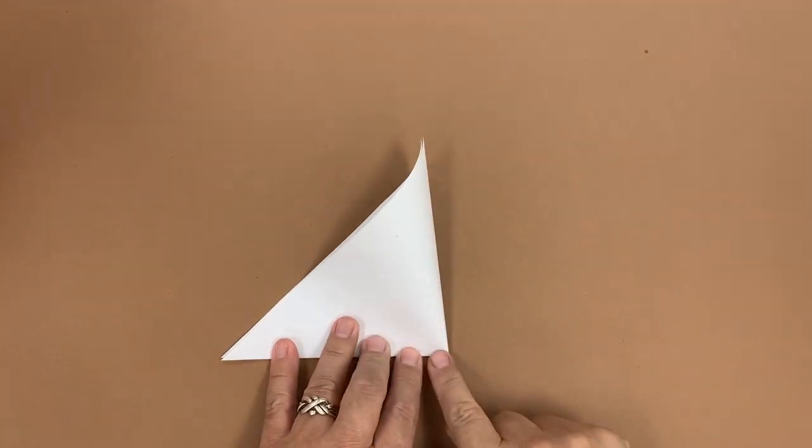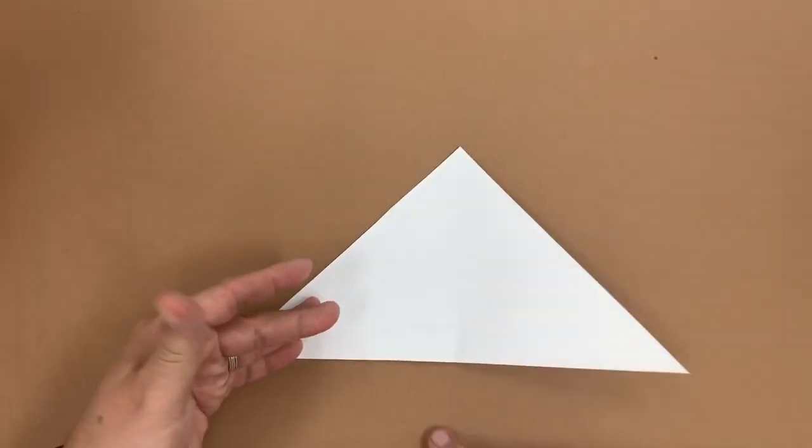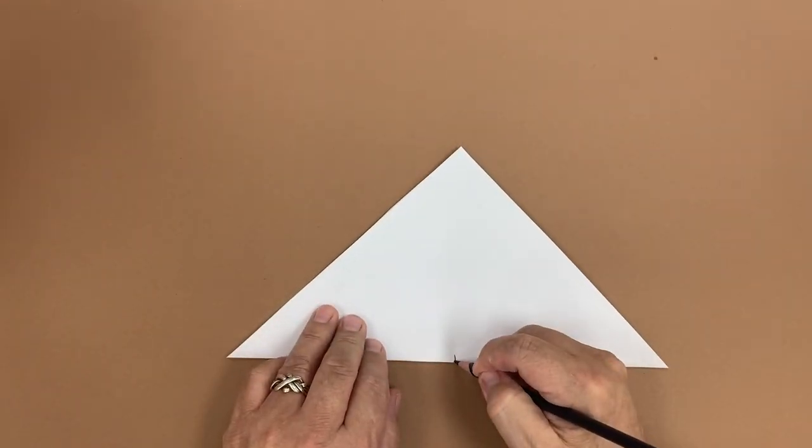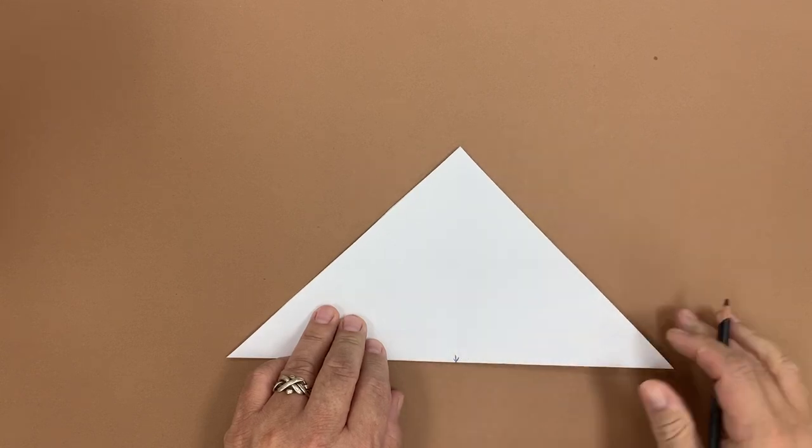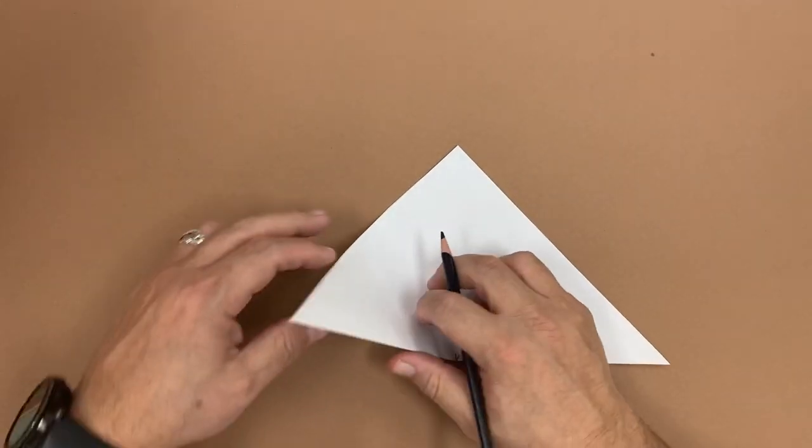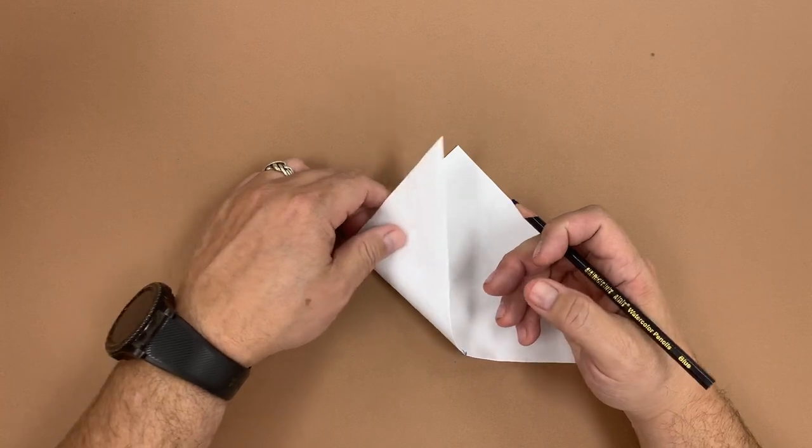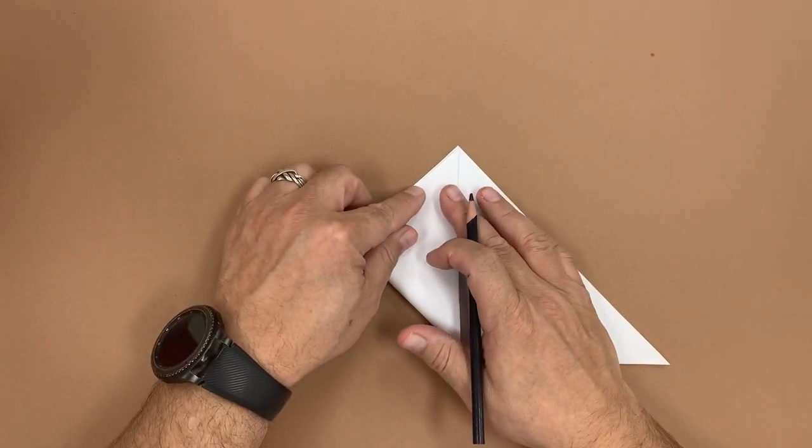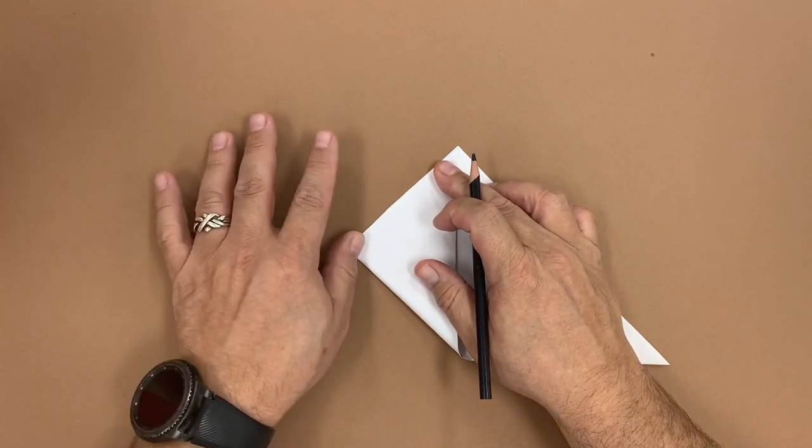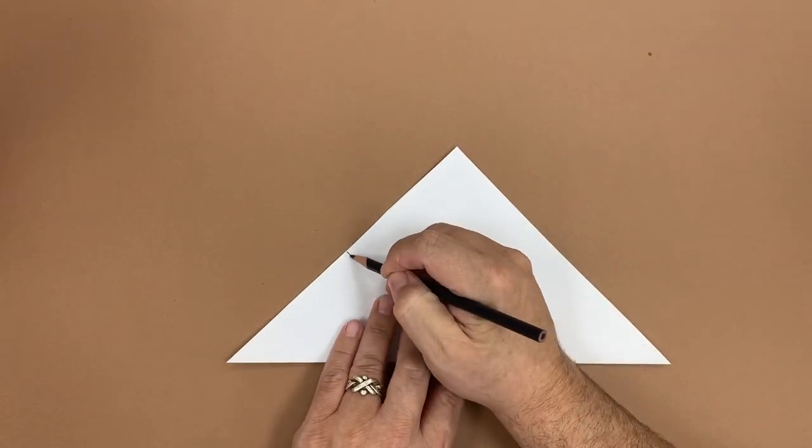We're not actually going to fold it. We just want to pinch it on the edge so we can find our halfway mark. I'm going to put a pencil mark here so you can see it, but if you're doing this for yourself, you don't necessarily need the marks. Now we're going to fold the left side up to the top and, again, pinch so we have another reference mark.